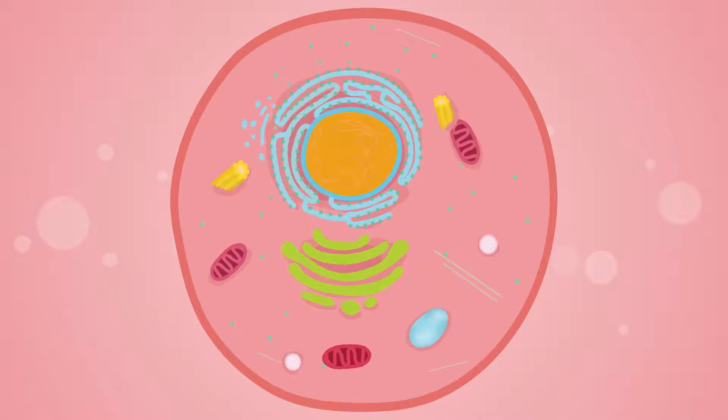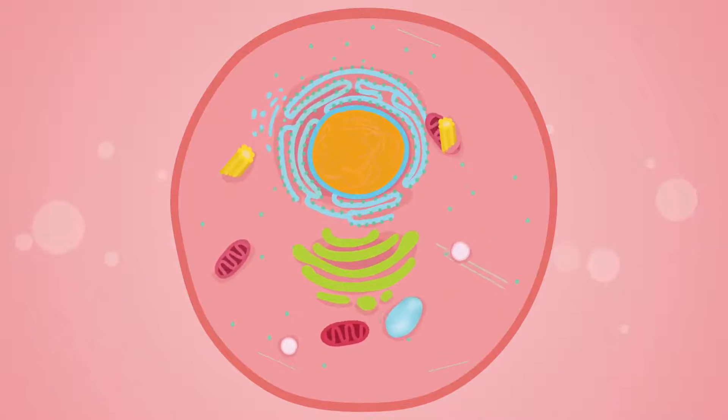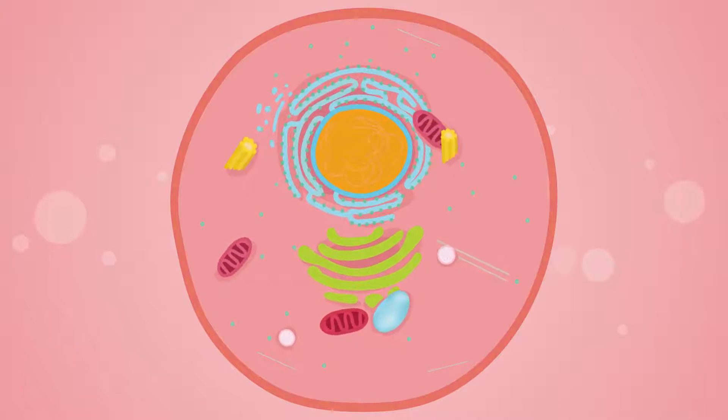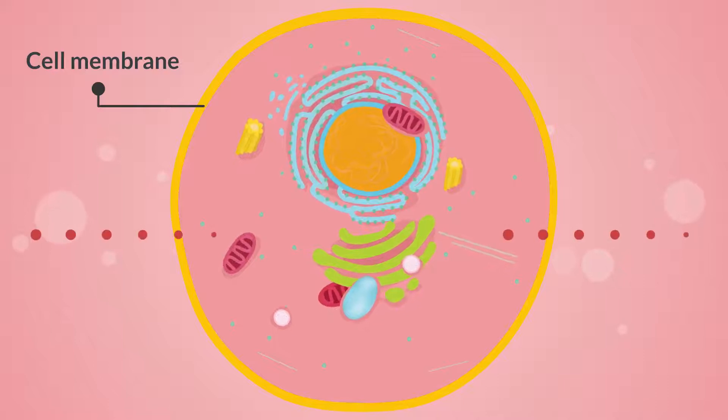Now let's have a closer look at how a cell is organized. You can think of it as a water balloon. Each cell is surrounded by a layer called the cell membrane that helps to keep everything inside and controls what leaves and enters the cell.